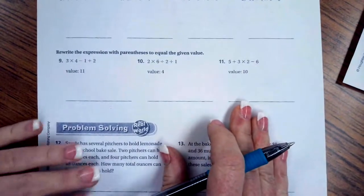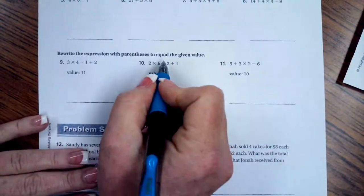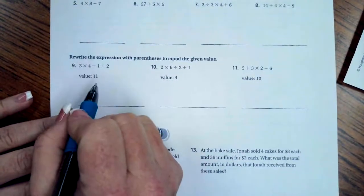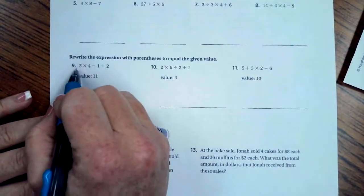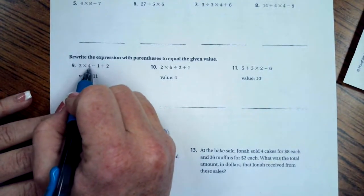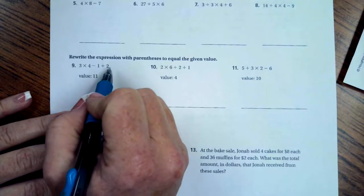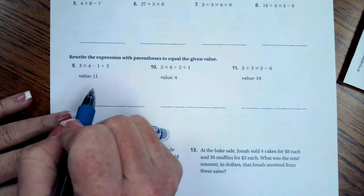We are going to rewrite the expressions with the parentheses to equal the given value. So this one we want to equal 11. So if I do 3 times 4, if I put the parentheses here, then I get 12. Minus 1 is 11, but then I have to add 2. That doesn't work, right?